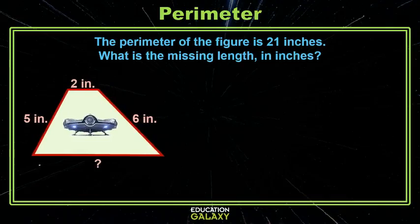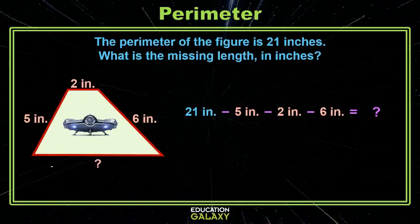One is we can start with the total perimeter and then we can subtract off each of the side lengths that we do know. Then we'll be left with the side length that we don't know. So in this case, 21 minus 5, 16 minus 2, 14 minus 6, 8.